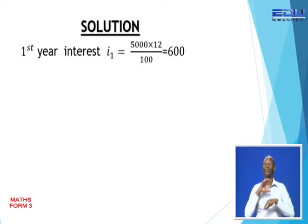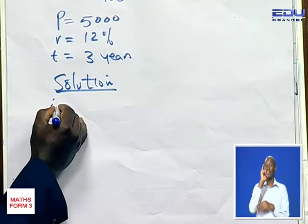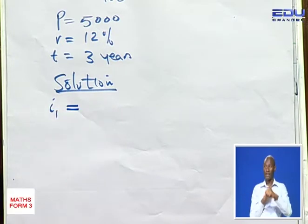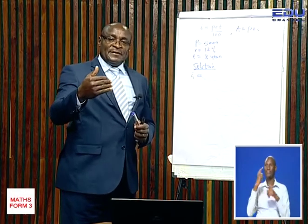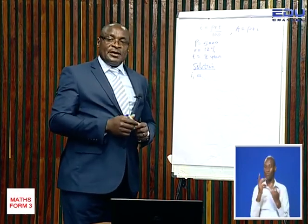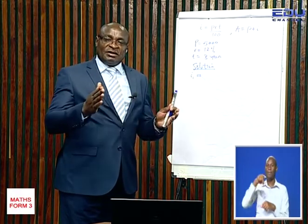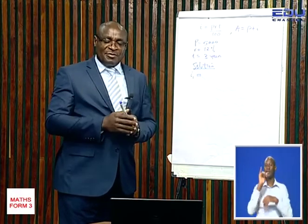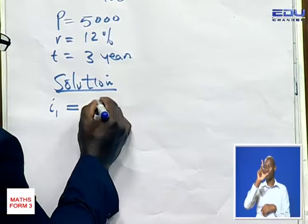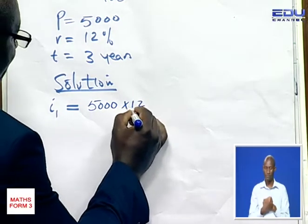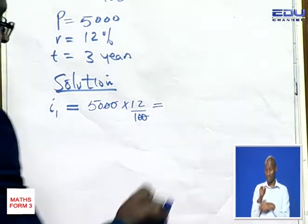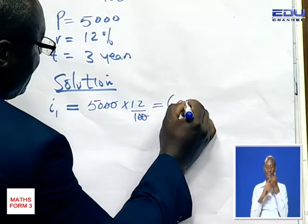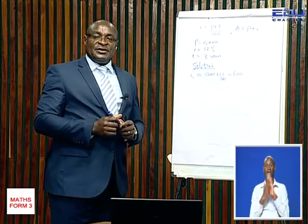To get the solution, we look at the interest for the first year. We calculate PR over 100 times T, where T is 1 because we are working per time interval of 1 year. This gives us 5,000 times 12 over 100, which equals 600. So 600 is the interest for the first year.